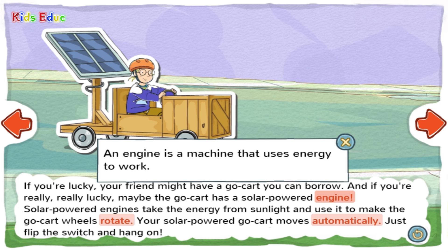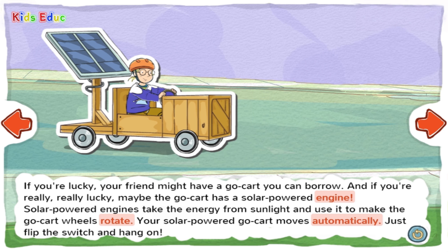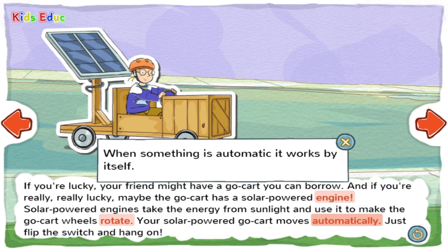Engine: An engine is a machine that uses energy to work. Engines can make things move, such as the wheels of a car. Automatic: When something is automatic, it works by itself.